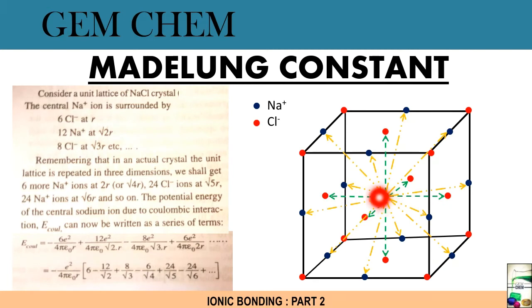These blue balls are our Na⁺, whereas red balls are our Cl⁻. If we consider this particular central sodium ion, then its first nearest neighbor is 6 Cl⁻. These are given by green arrows: 1, 2, 3, 4, 5 in the down portion and 6 here.